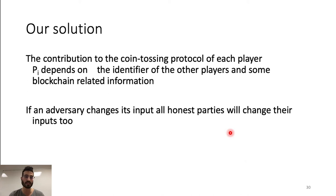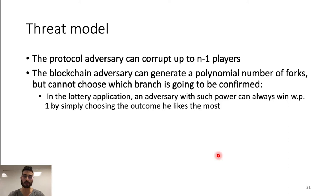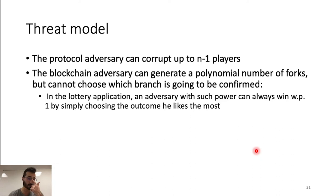Let's start the introduction of our protocol with the threat model. In our threat model, the protocol adversary can corrupt up to n-1 players. The blockchain adversary can generate a polynomial number of forks, but cannot choose which branch is going to be confirmed. If we look at the lottery application, an adversary with such power can always win with probability 1 by simply choosing the outcomes it prefers between all the branches.